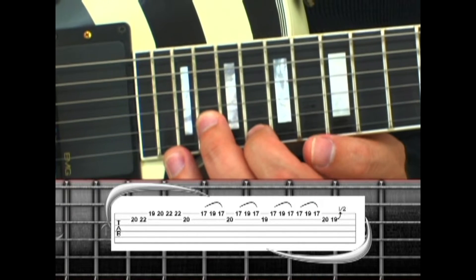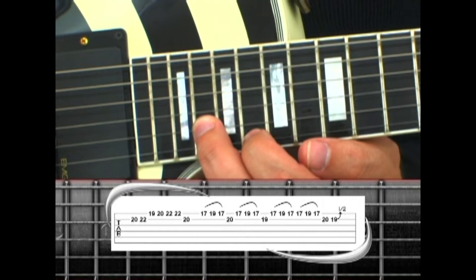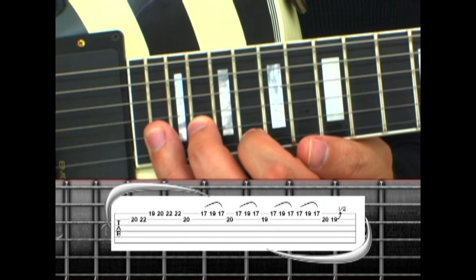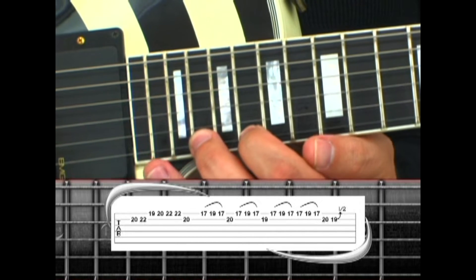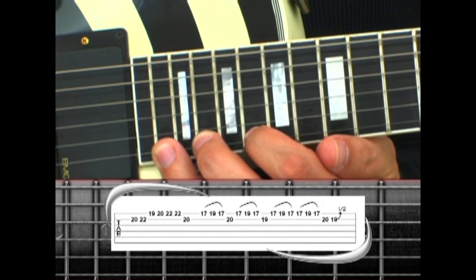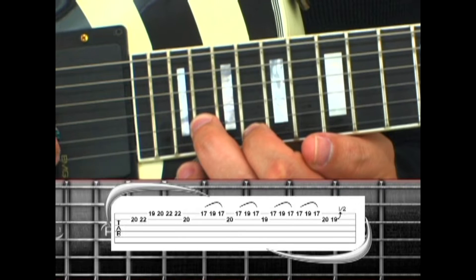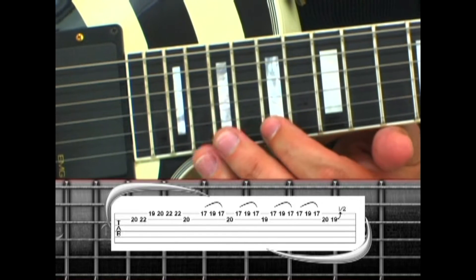There is also a harmony over Phrase 11 starting on the 2nd string 20 to 22, 1st string 19, 20, 22, 22, back to 2nd string 20. The hammer pulls are 17,